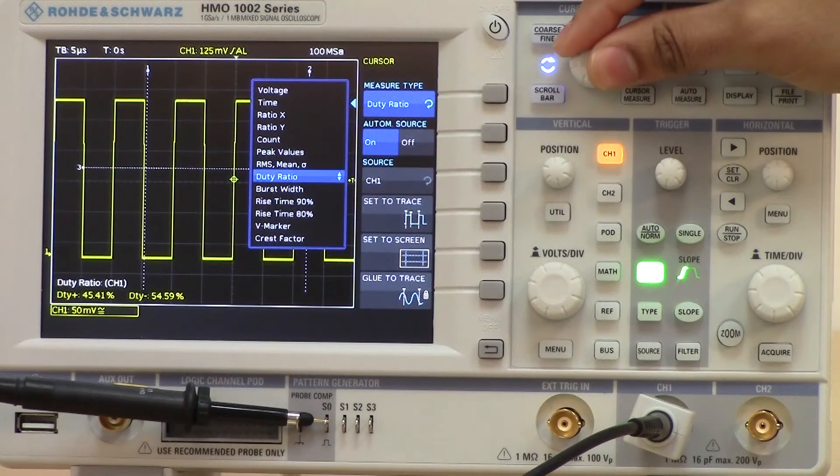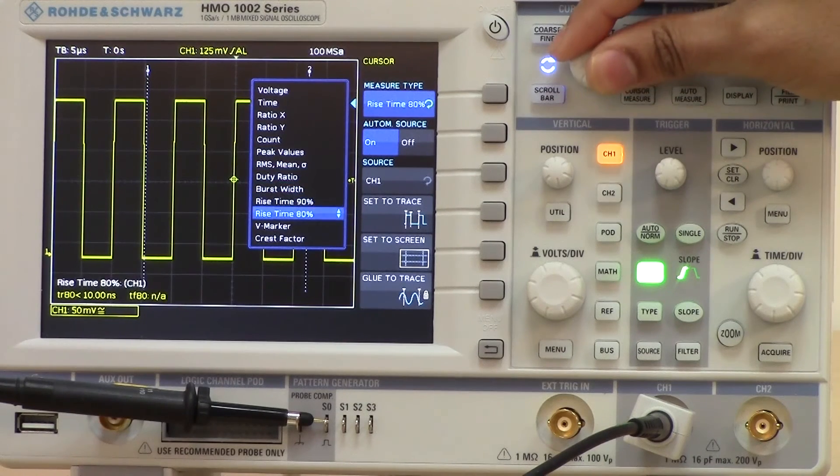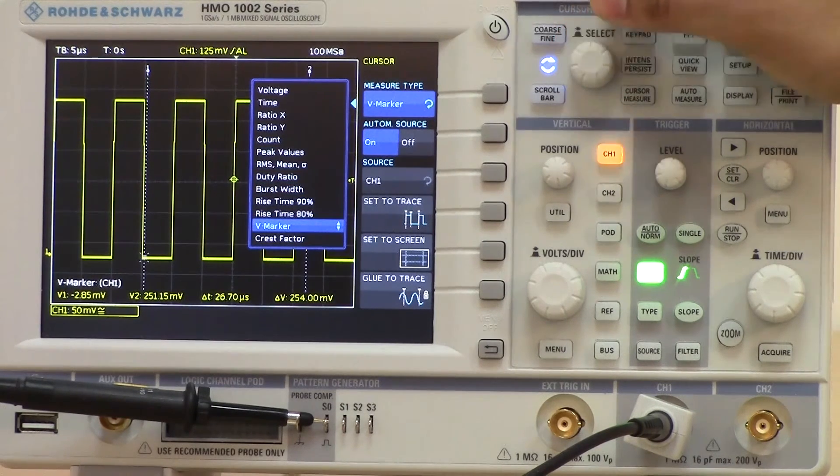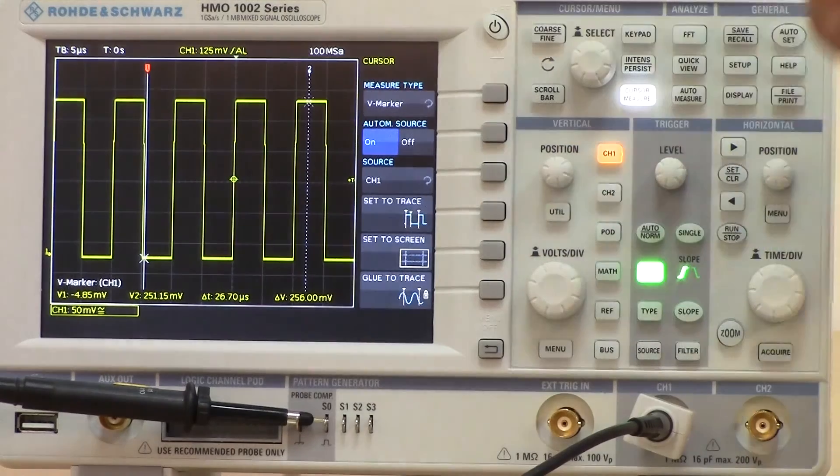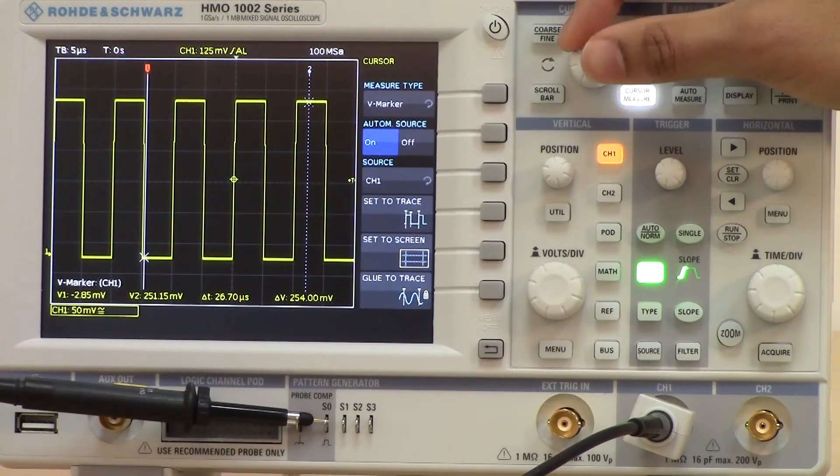If users want to look at both voltage and time, this is achieved by using the V marker. If you select the V marker, we now get V1, V2, and also the delta of the time and the voltage.